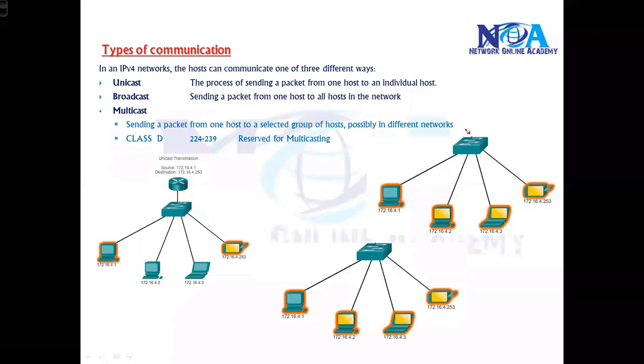The next thing we need to understand is unicast, broadcast, and multicast. Basically in a network we can have three different types of communications. In any network, especially in IPv4, the communication process can go either unicast, broadcast, or multicast.